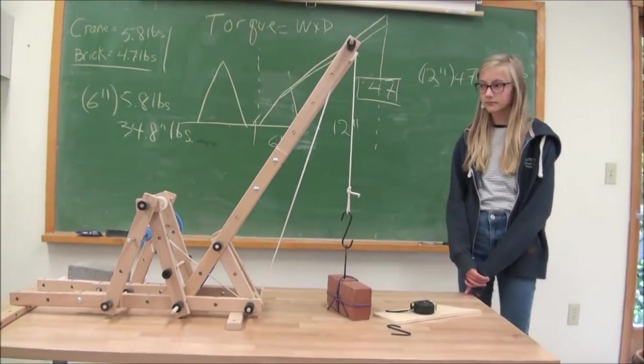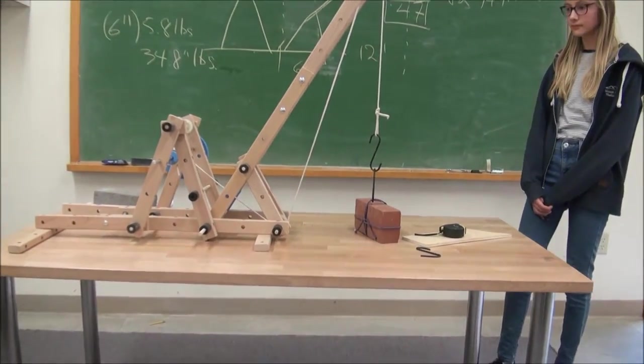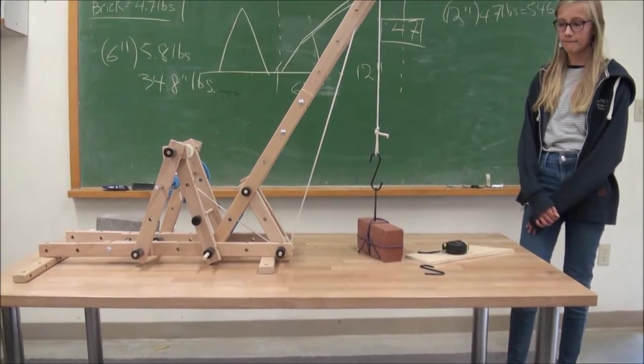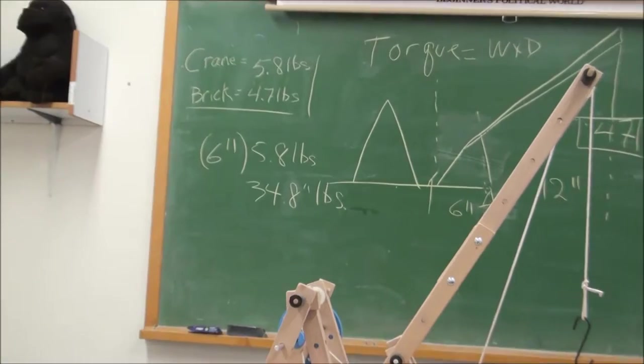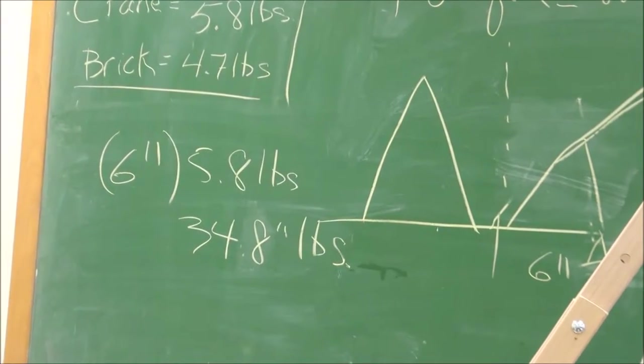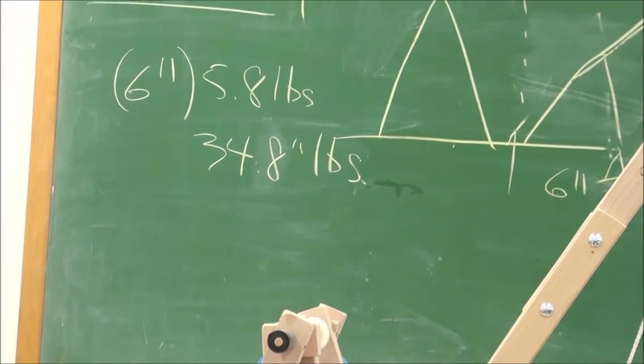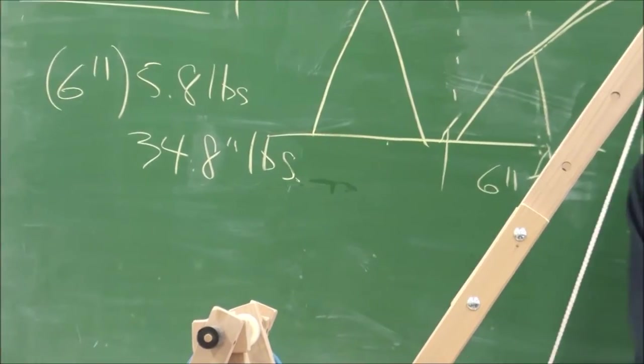Okay, Sophie. We have a crane that looks like a seesaw because it tips. The pivot point's right here. So on one side we have the crane, which weighs 5.8 pounds. The distance from the center of gravity to the pivot point is 6 inches. So weight times distance gives us 34.8 inch pounds.